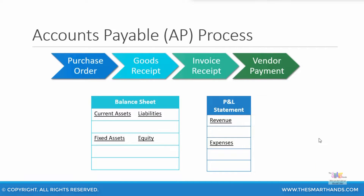Let's look at a high-level view of an Accounts Payable process. You might want to purchase an item for your organization, so you could raise a purchase order. Once the item comes through, it will be a goods receipt, and then you might also get the invoice at the same time, or might receive the invoice from the vendor later — it becomes an invoice receipt process.